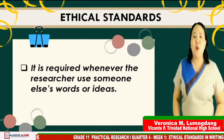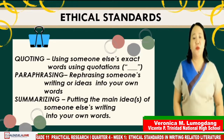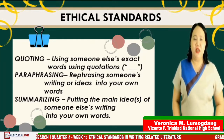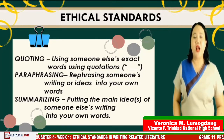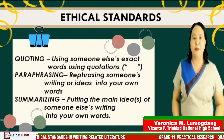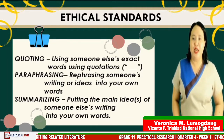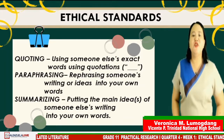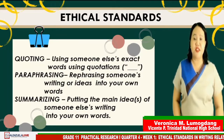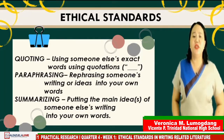It is required whenever the researcher uses someone else's words or ideas. When citing, we can do the following: we have quoting, paraphrasing, and summarizing. Now let's differentiate the three. Quoting is using someone else's exact words using quotation marks. Paraphrasing is rephrasing someone's writing or ideas into your own words. And summarizing is putting the main idea of someone else's writing into your own words.